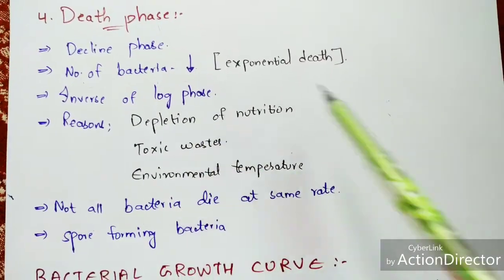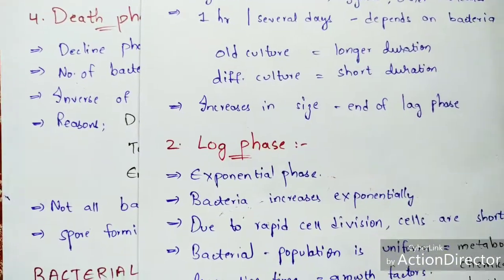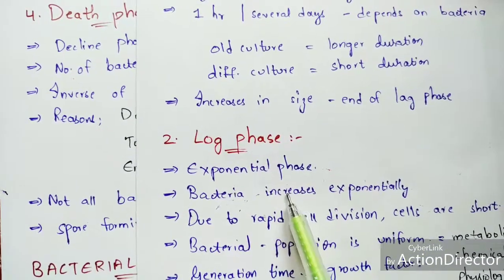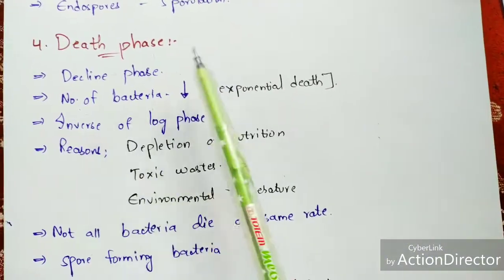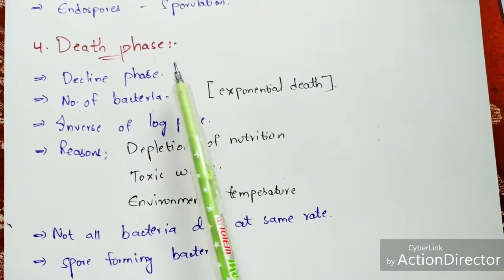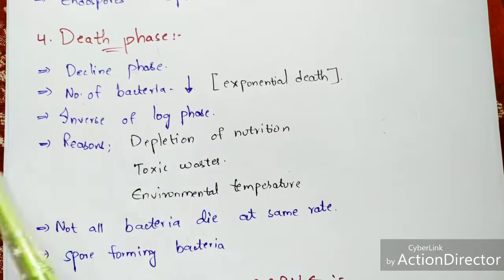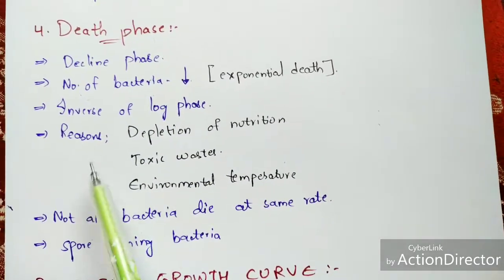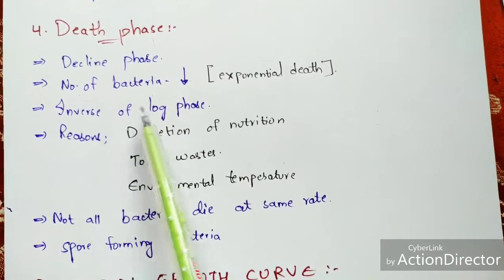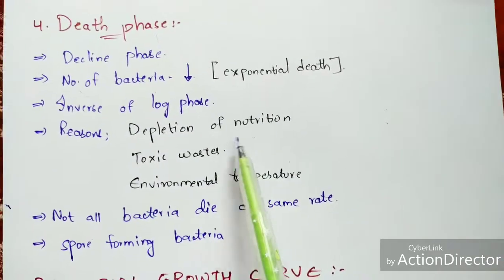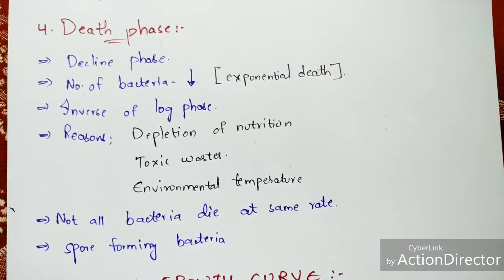The death phase is the inverse of the log phase: whereas rapid division takes place in the log phase, rapid death of bacterial cells takes place in the death phase. The reasons behind cell death include depletion of nutrition, accumulation of toxic waste, and environmental temperature. If environmental temperature is too high or too low, bacteria may die; a stable temperature is required for survival.